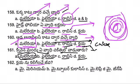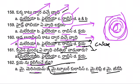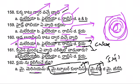Dapsone is used to treat Leprosy. The organism causing tuberculosis is Mycobacterium tuberculosis. This is the bacterium causing tuberculosis.